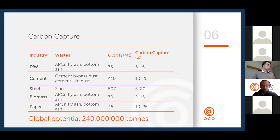The potential for accelerated carbonation extends to a wide variety of different residues. Our focus in the UK is fly ash from energy from waste, but the technology can be applied to residues from the cement, steel, biomass, and paper industries as well. If you look at global arisings of those materials and the potential carbon capture — which can be up to 25 percent by weight — if you could convert all of that into a construction product, there's a potential to capture up to 240 million tons of CO2.